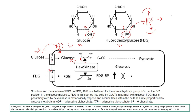Once FDG gains entry into the cell, it is acted on by an enzyme called hexokinase, which converts FDG to FDG-6-phosphate. However, the next group of enzymes cannot act on this substrate because it requires a second carbon hydroxyl group, which FDG-6-phosphate does not have. As a result, glycolysis cannot proceed further, and FDG gets metabolically trapped.